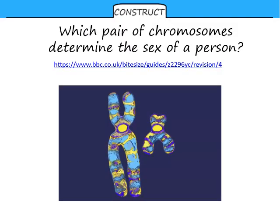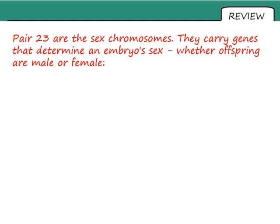One of the things that a particular pair of chromosomes controls is what sex you are. I'd like you to have a go at answering this question: which pair of chromosomes actually determines the sex of a person? I've got a picture of the chromosomes in question here. I'm going to include a link in the description box below this video, so please pause, go to that link, and have a go at answering this question. The pair that controls sex in humans is numbered pair 23 — the very last pair. They carry genes which determine an embryo's sex, whether the offspring is going to be male or female.